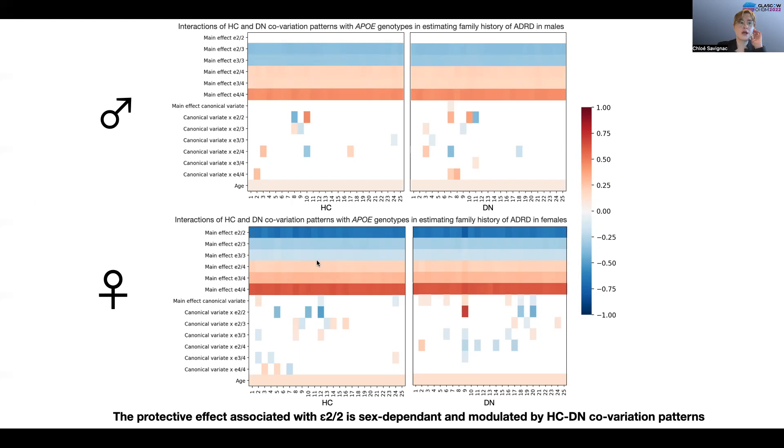Then if we look, we see in females that there is a main protective effect of E2E2 on Alzheimer's disease risk that is not observed in males, even in our sample of 20,000 UK Biobank participants.